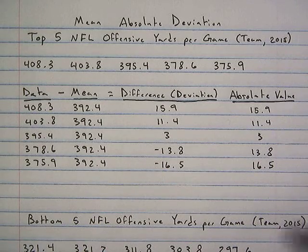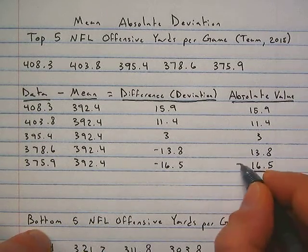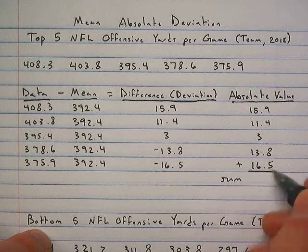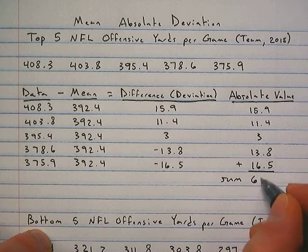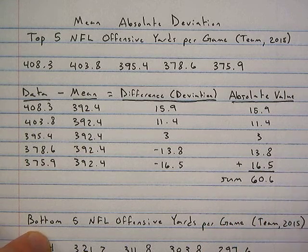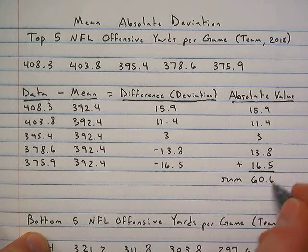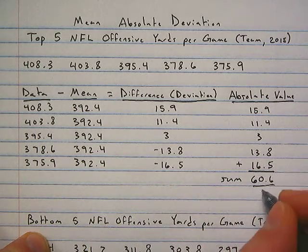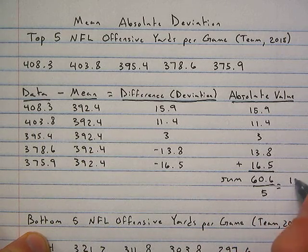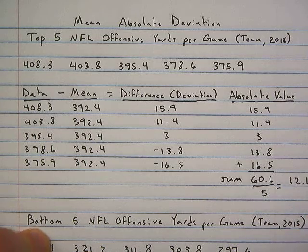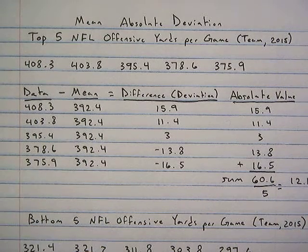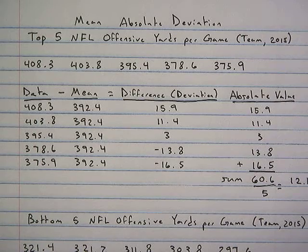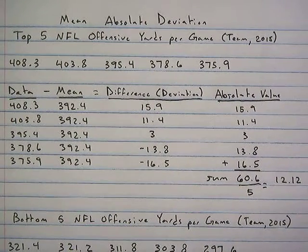So we have our deviation column and our absolute deviation column, and we need to find the mean of that. We'll add all these up to get a sum of 60.6, then divide by the total number of data points, which is 5. We get that our mean absolute deviation is 12.12 for the top five NFL offensive yards per game by team in 2015.